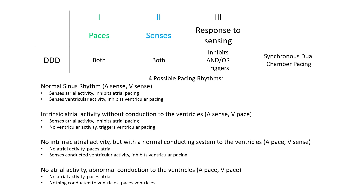DDD is a more complex mode that can both sense and pace both the atria and ventricles, and requires functioning atrial and ventricular pacing wires. There are four possible pacing rhythms in DDD depending on the underlying intrinsic activity of the heart. This is because sensing atrial activity can also trigger ventricular pacing. Pause the video now to read more about pacing rhythms in DDD.